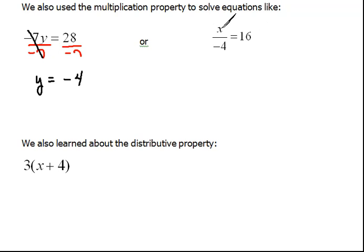In this problem we have x divided by negative 4 equals 16. Remember the opposite of dividing by negative 4 would be to multiply by negative 4. As long as we do it to both sides, that's a valid math move. So we would simplify that. On the left we would have x equals, and on the right 16 times negative 4 is negative 64.